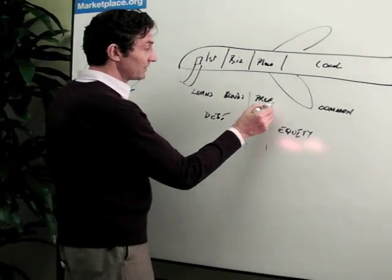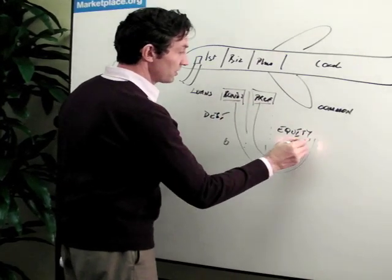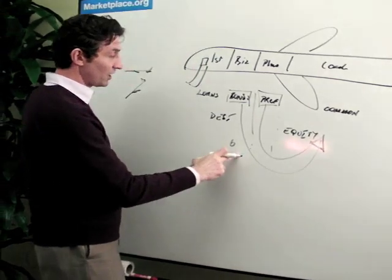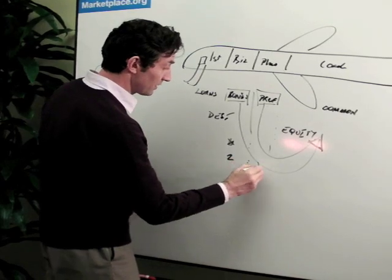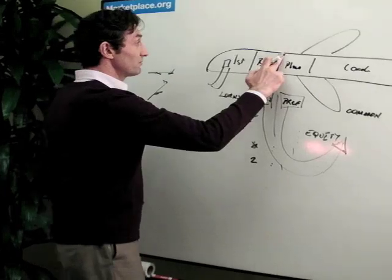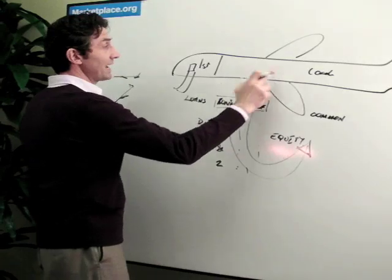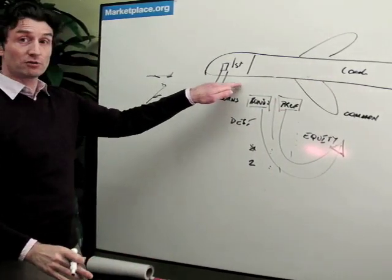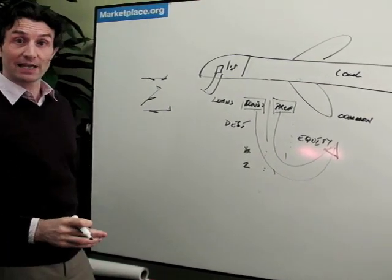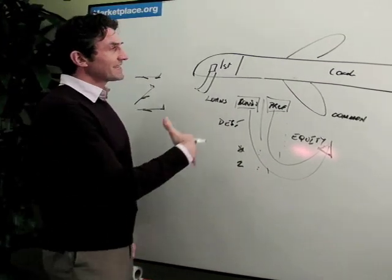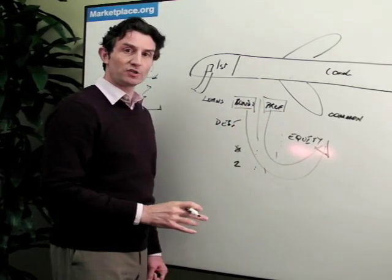So say, for example, these preferred guys and these bond guys, they all decided to convert to common stock. Well, what does that do? Well, it means that you've cut your leverage down. Your leverage is now down to, say, two to one. It means you're flying much more steadily. It means you've got much more people in coach now. Coach is much larger. Your equity is much larger in comparison to your debt, which means that you've rebalanced the aircraft and you're flying much more straight and level again.